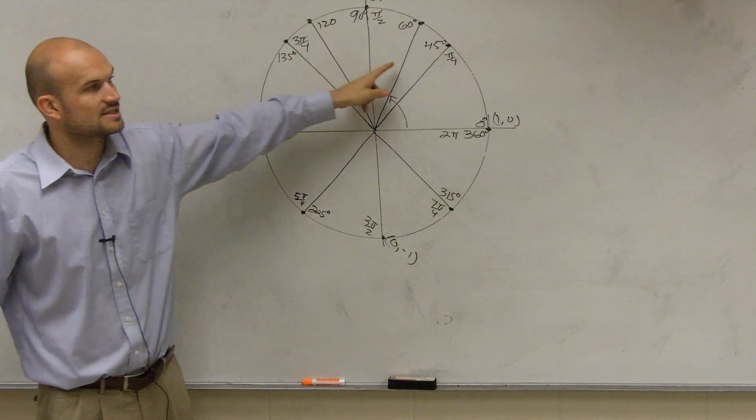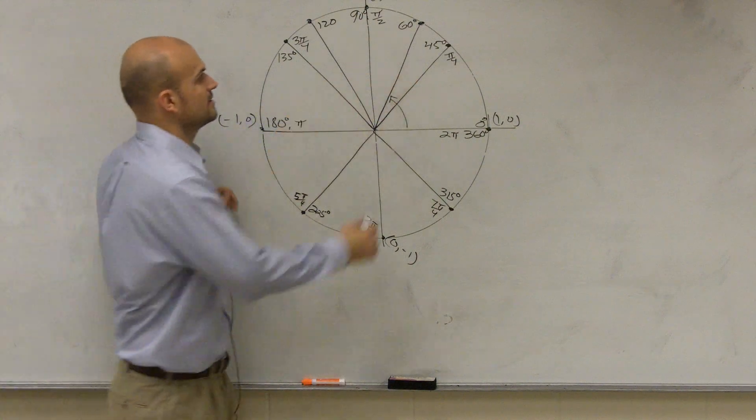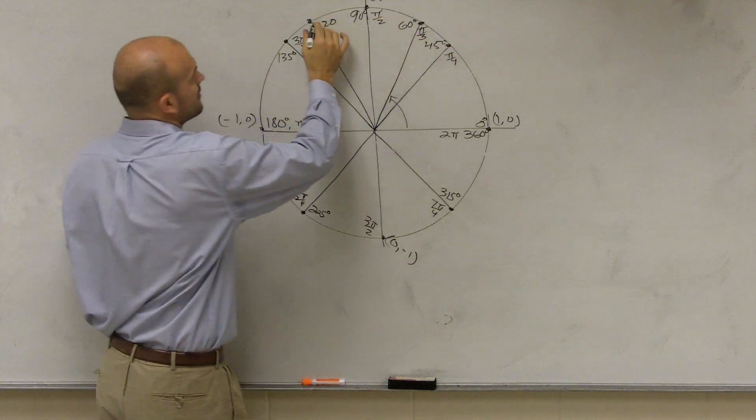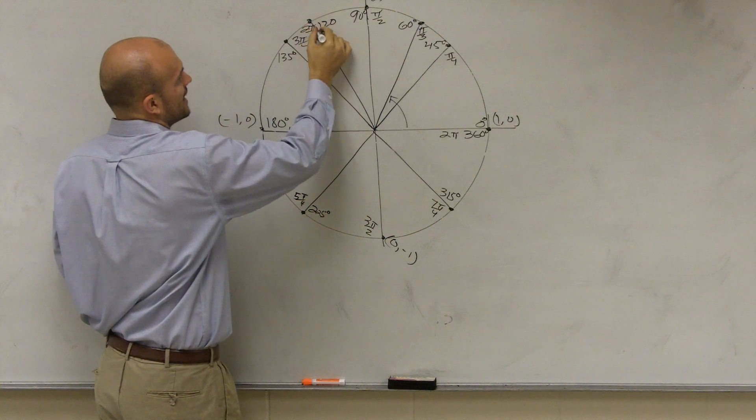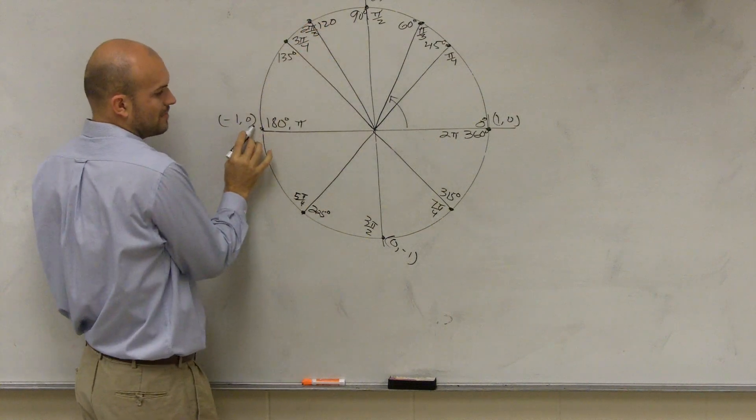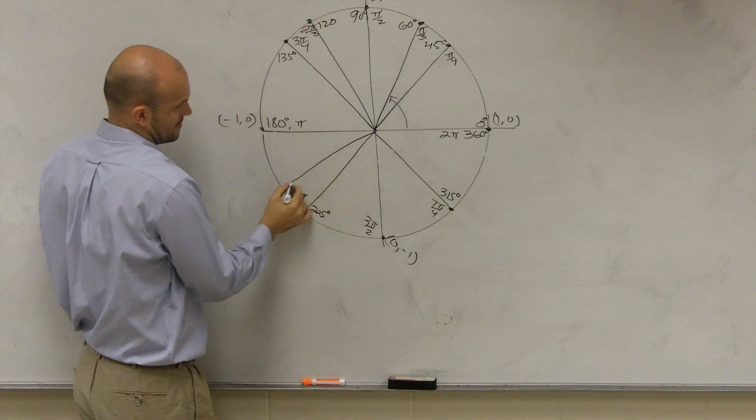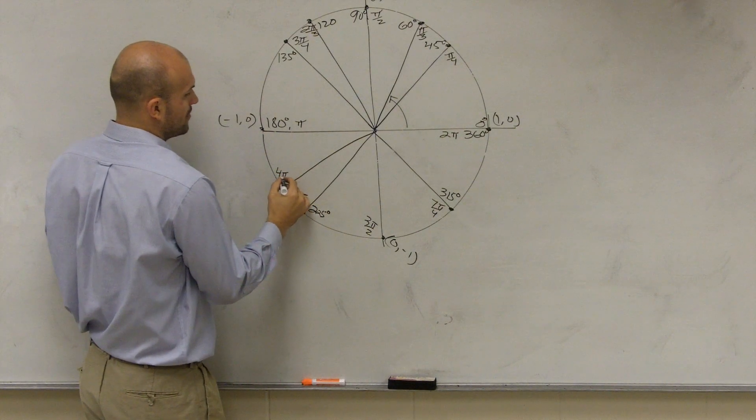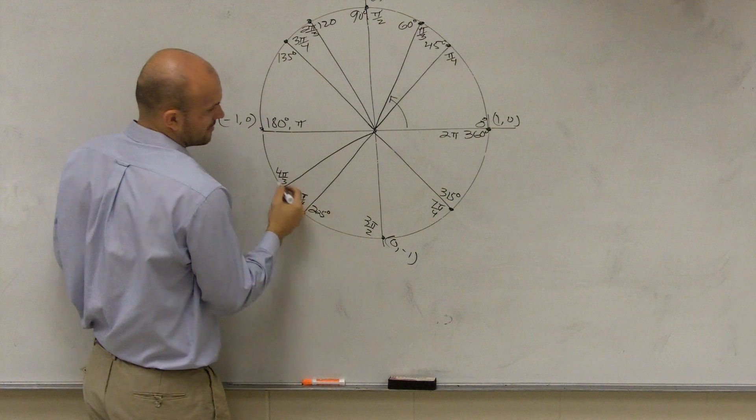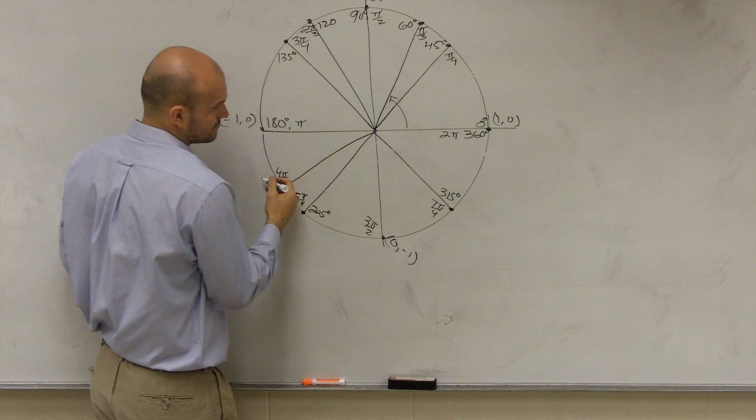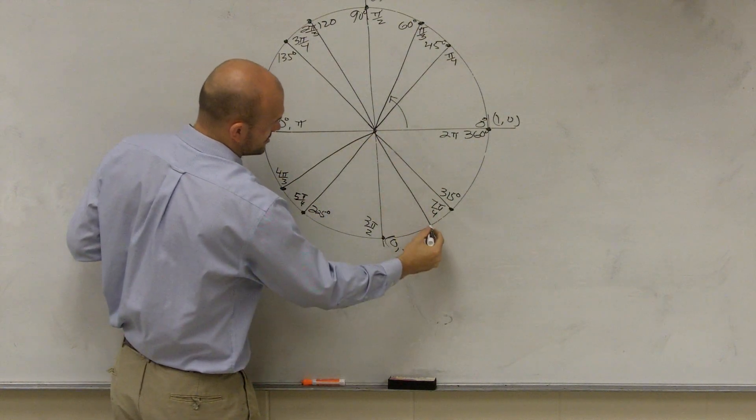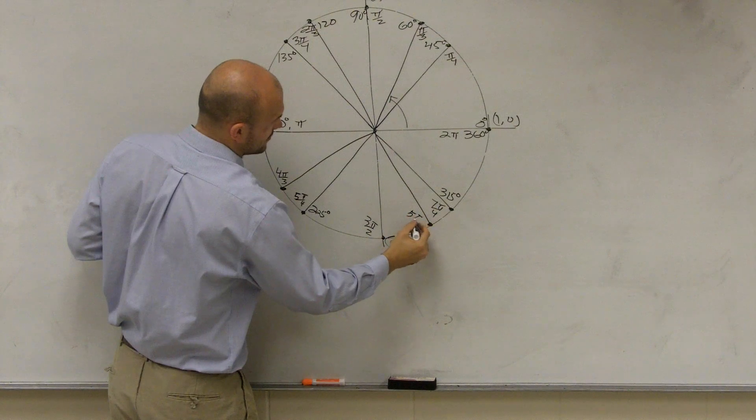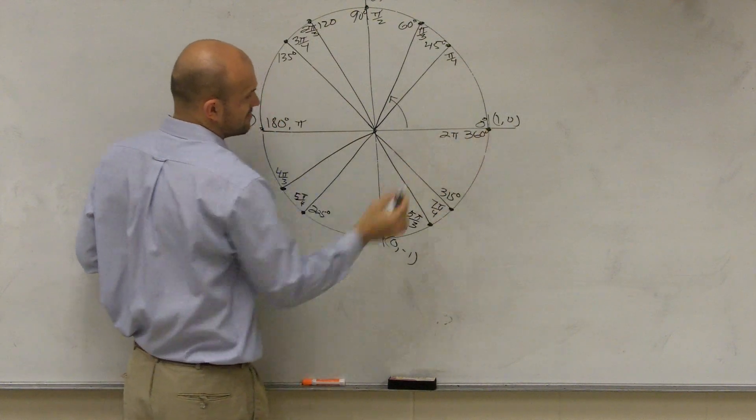So if I have 60, 120, and then this is 180. So what fraction is this first one? One third. So it'd be pi over 3. This one is 2 pi over 3, 3 pi over 3. So then my next point is going to be 4 pi over 3. And then this point is going to be 5 pi over 3, 6 pi over 3.